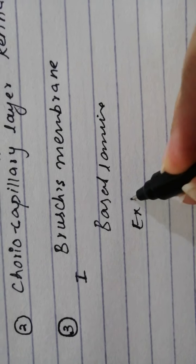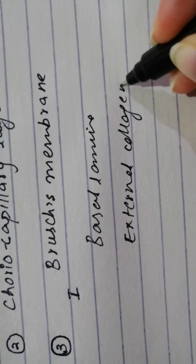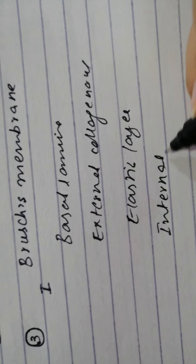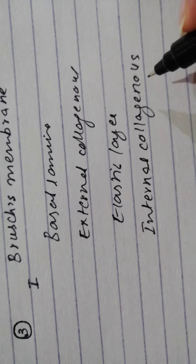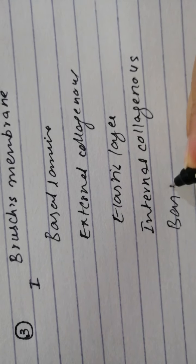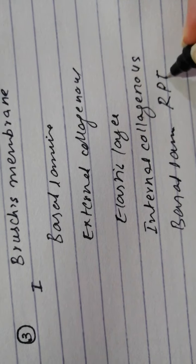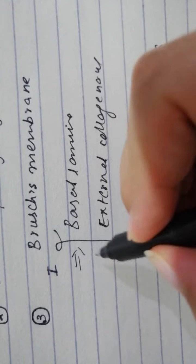So there is an external collagenous layer, an elastic layer, an internal collagenous layer. And because the innermost layer of the retina is the pigment cell, then we have the basal lamina of RPE which is retinal pigment epithelium. All of these together make up the Bruch's membrane. You have to remember the order as well.